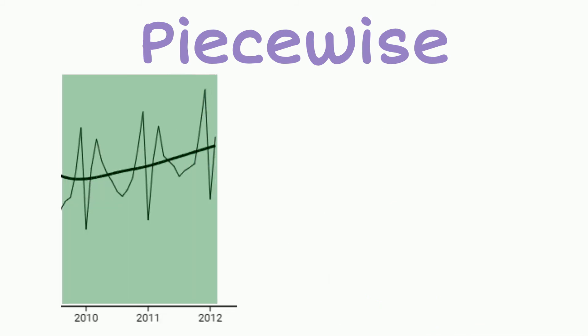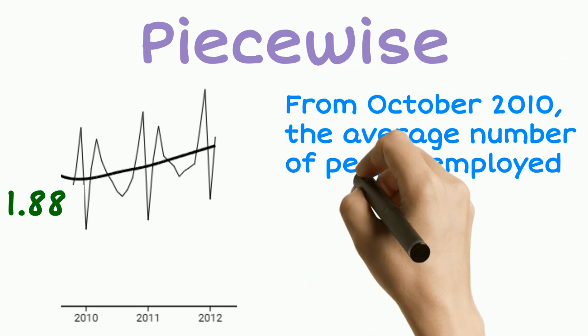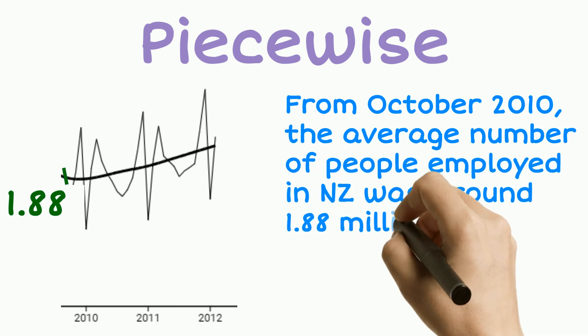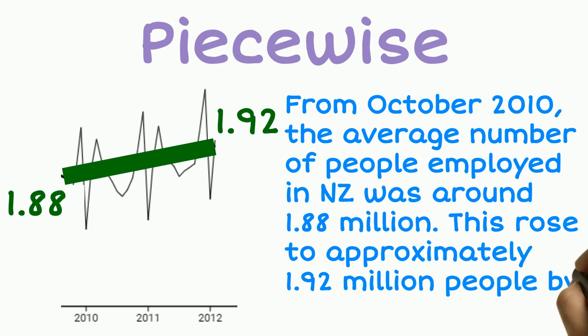Now let's look at section three. So from October 2010, the average number of people employed rose from an average of 1.88 million to around 1.92 million jobs by February 2012.